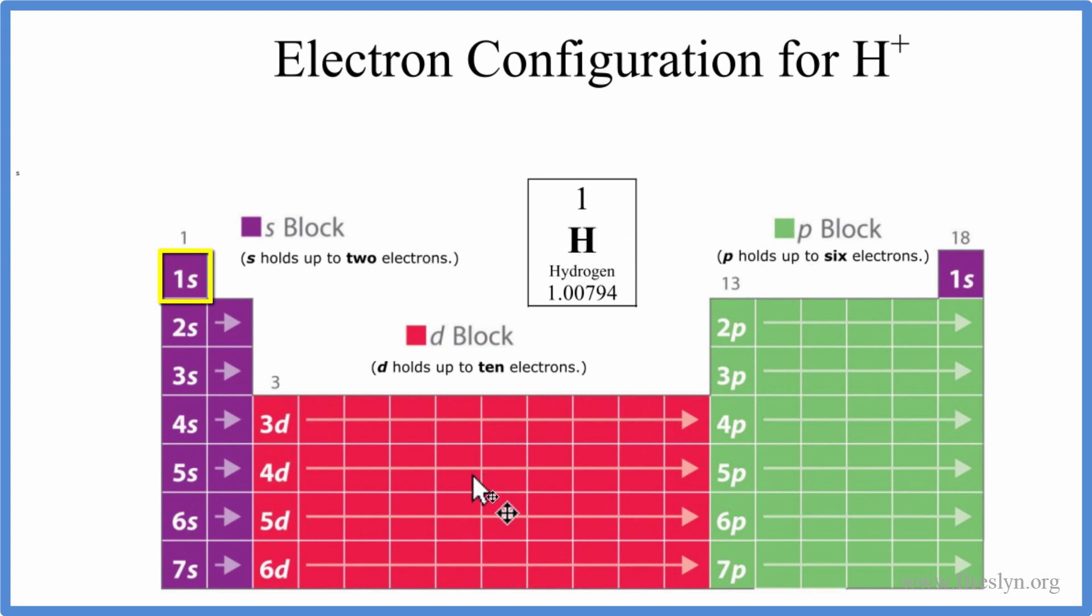So to write the electron configuration, we'll use this table here. We have it broken up into the different orbitals. You can also use this chart here. There's a link in the description that will show you how to do that, but I think this is a better way to do it.